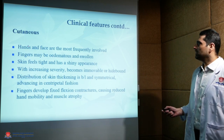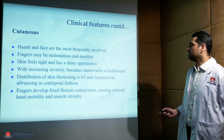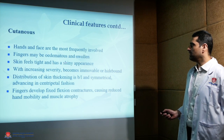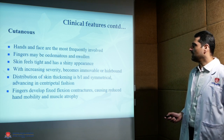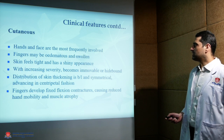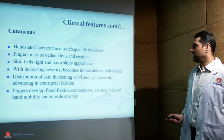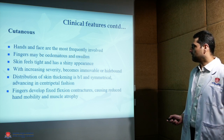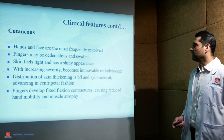Cutaneous manifestations may involve the hands and face; fingers may be edematous and swollen. Skin feels tight, hide-bound, and has a shiny appearance. With increasing severity it becomes immovable. Distribution of skin thickening is bilateral and symmetrical, advancing in a centripetal fashion. Fingers develop fixed flexion contractures, causing reduced hand mobility and muscle atrophy.